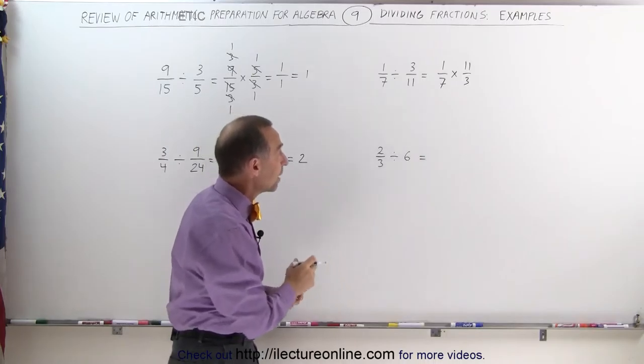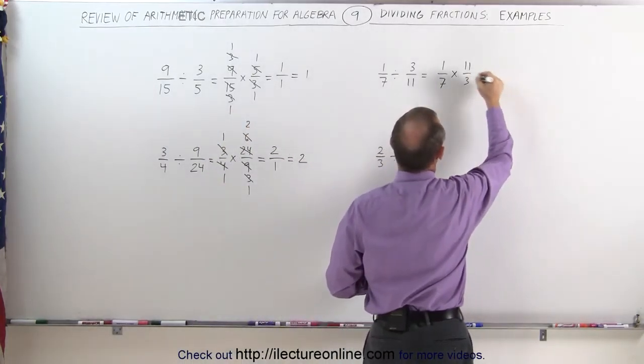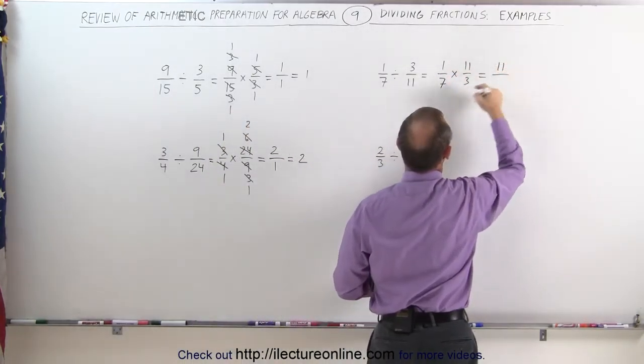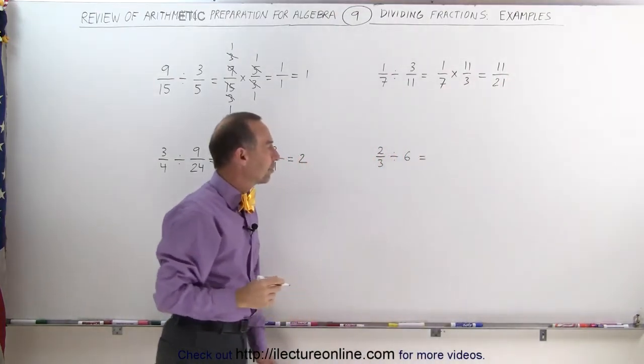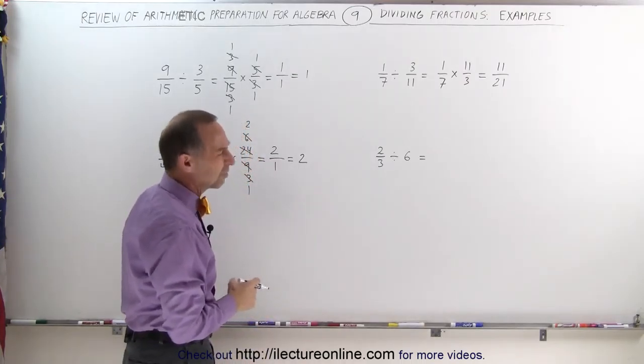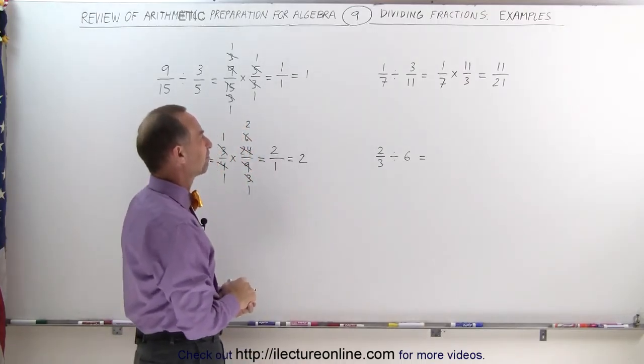We simply continue by multiplying the numerators together: 1 times 11 divided by 7 times 3, which is 21. The answer is 11/21, is that how you say it? Not quite sure. Anyway...